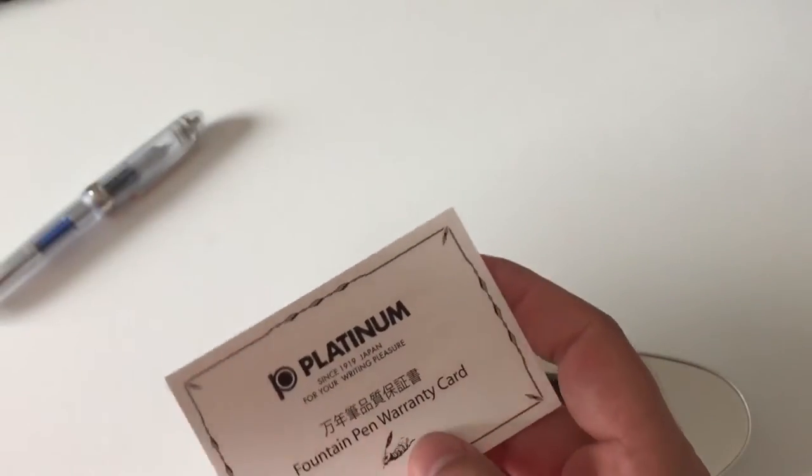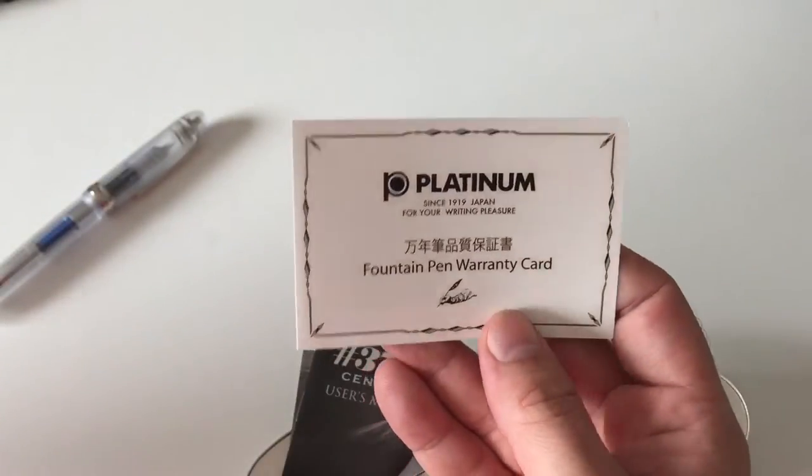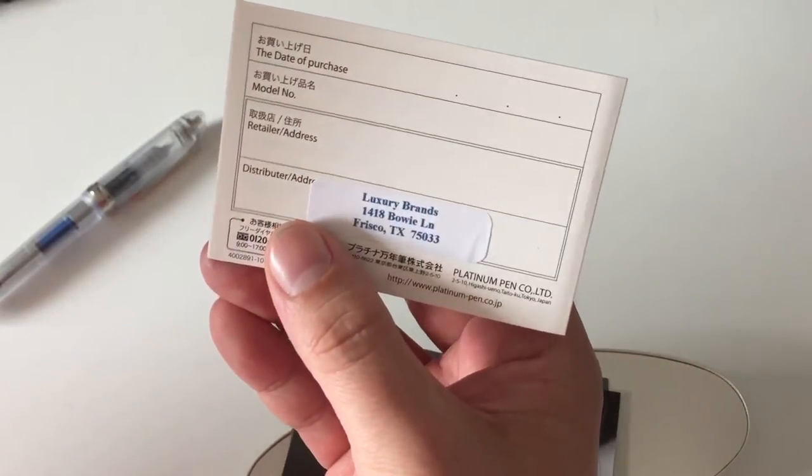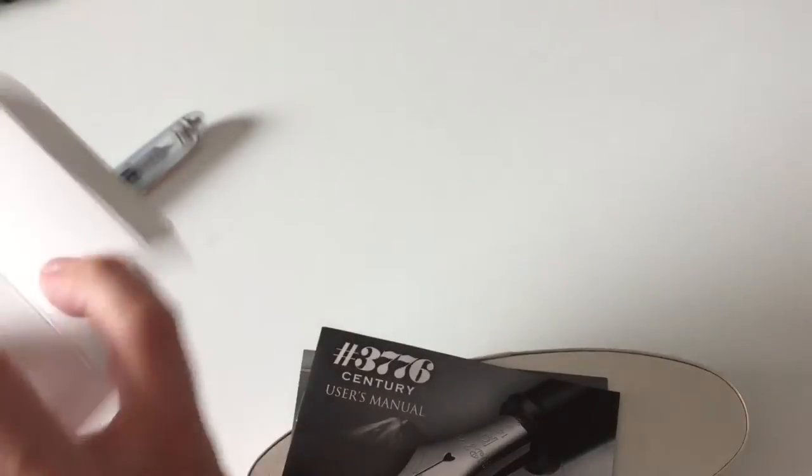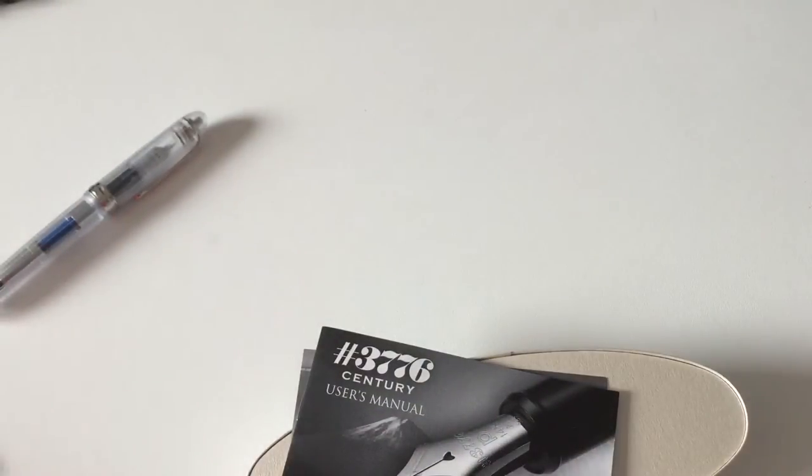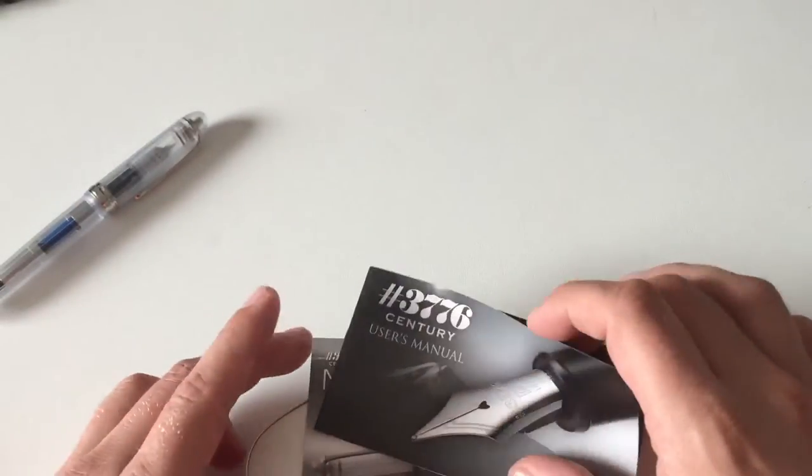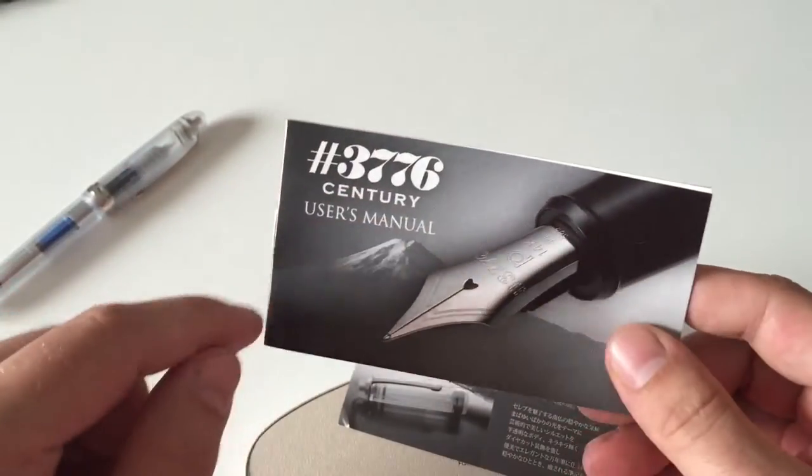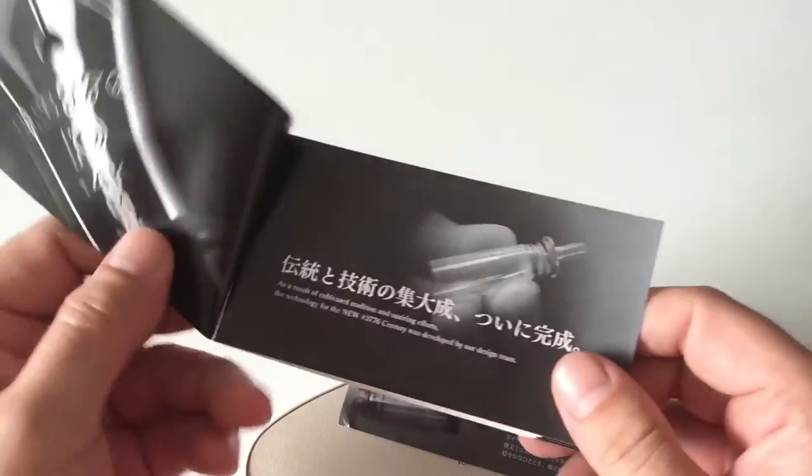Let's have a brief look at the packaging before we jump into the pen. There are just a couple of things I wanted to show you. First, you get a warranty card. As I said, I got mine from Luxury Brands—thanks a lot, John—for sending me this pen for review. 3776 is the height of Mount Fuji.